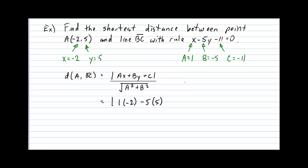And then plus C. In our case, C is negative 11. So we just copy down negative 11. Close the absolute value. And everything divided by the square root of the A squared. So we have one squared, plus the B squared. So we have negative five squared.